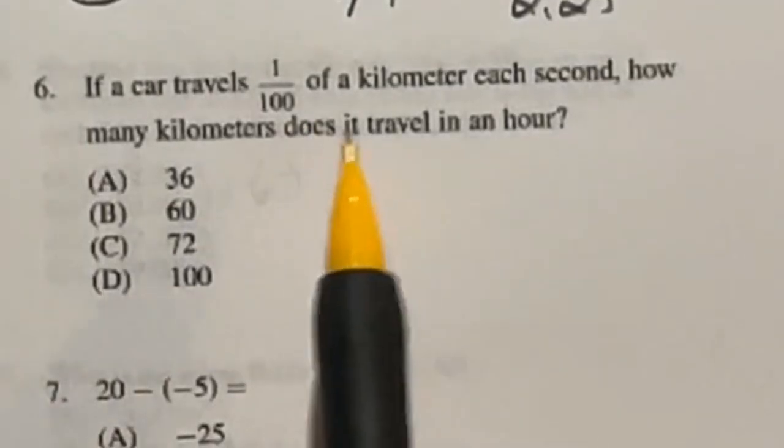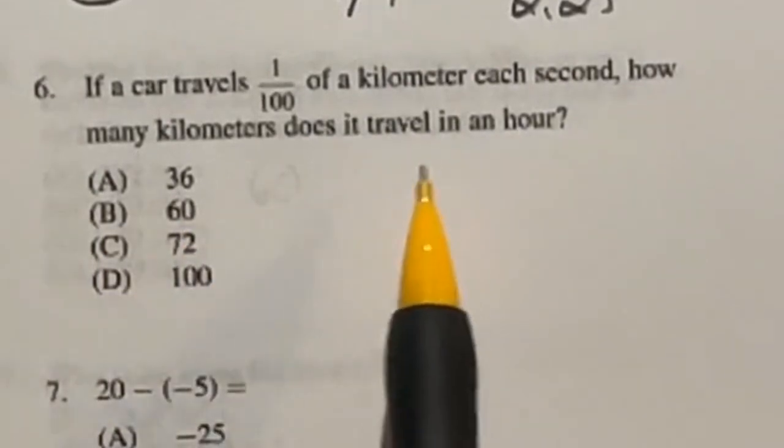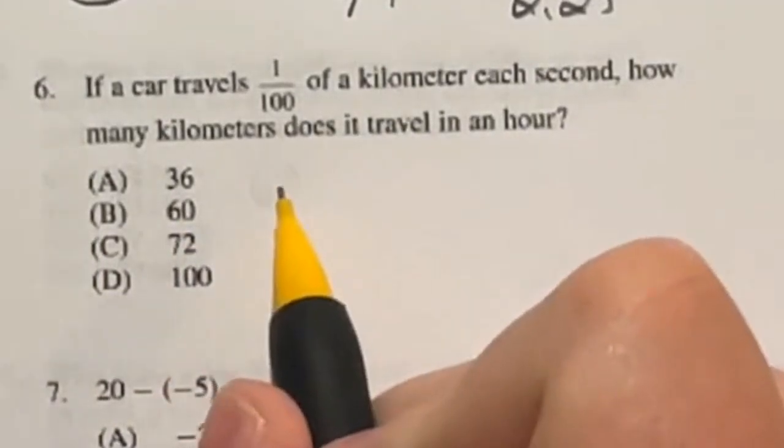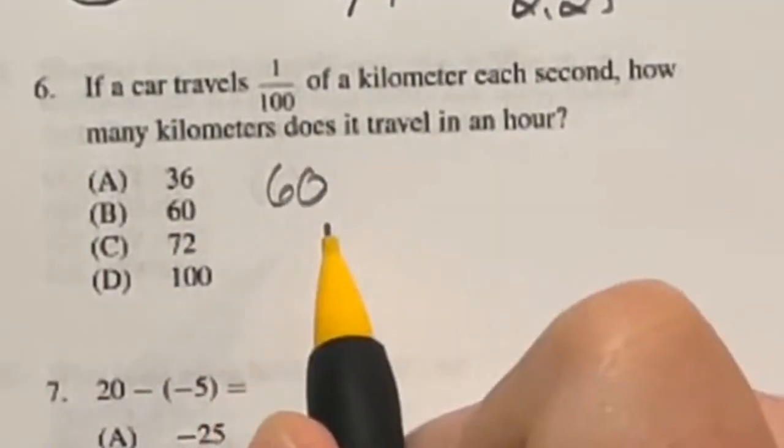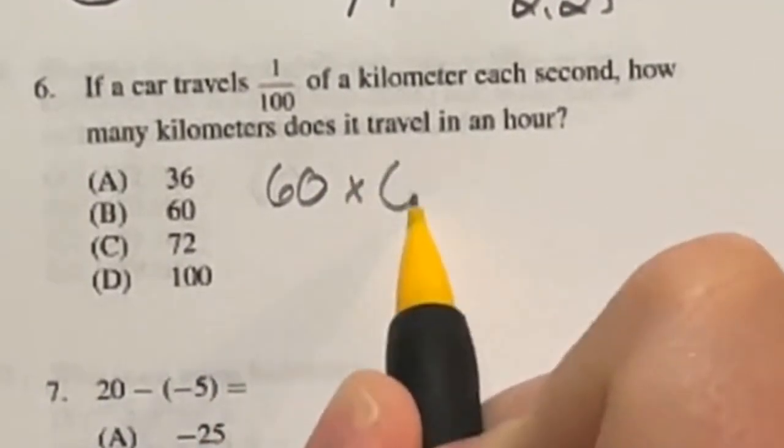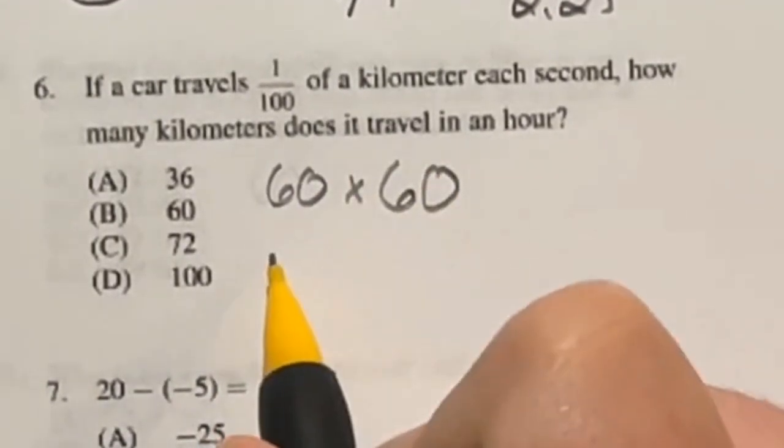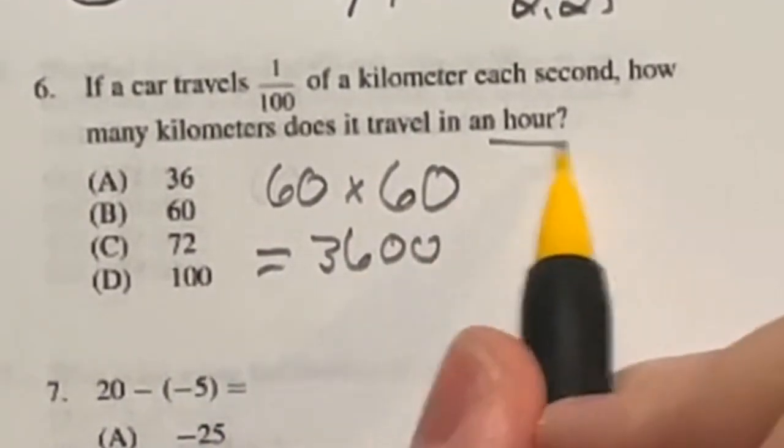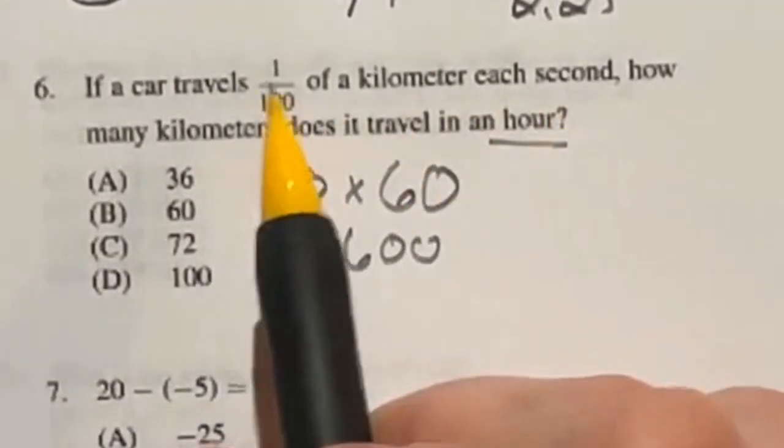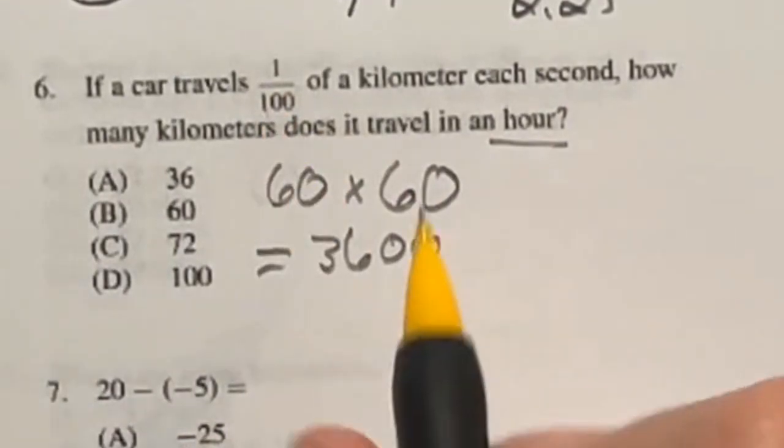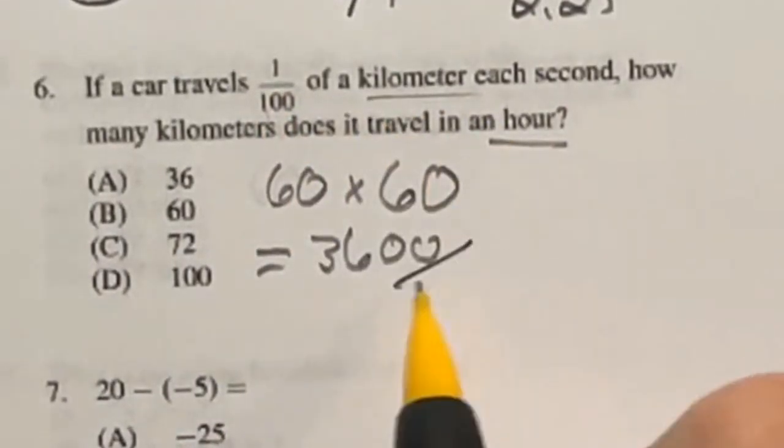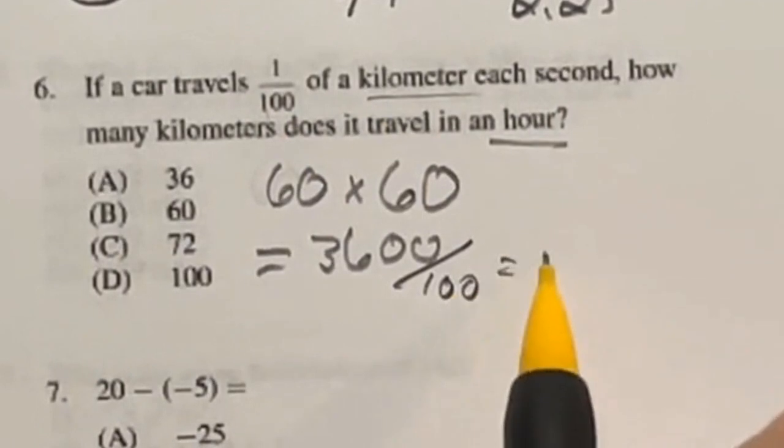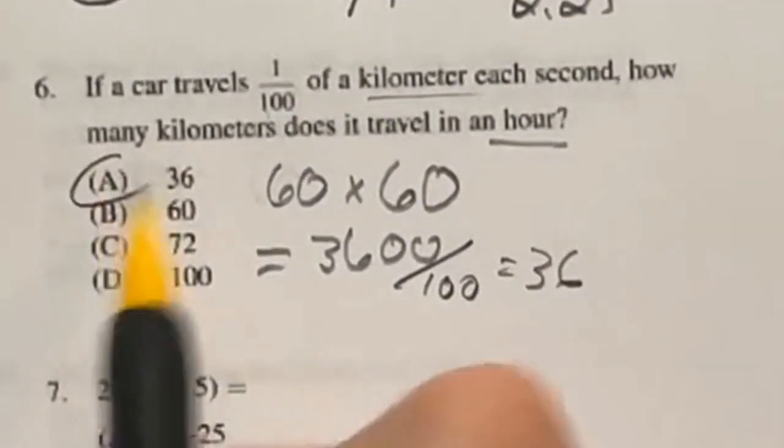If a car travels one over 100 kilometers each second, how many kilometers does it travel in an hour? Well, we know that there are 60 seconds in a minute, and then there's going to be 60 minutes in an hour. So we're looking at a total of 3,600 seconds in an hour, and we know that in a second, it's one over 100. So how many total kilometers would that be? Just divide this guy by 100 then, and that's going to end up giving us 36, which is answer A.